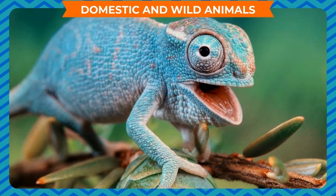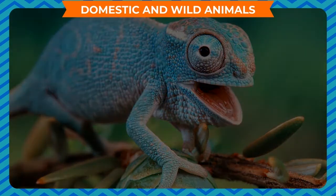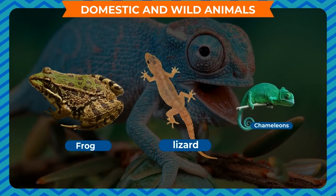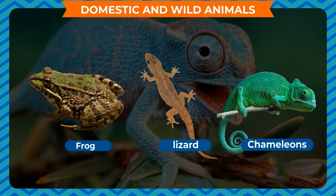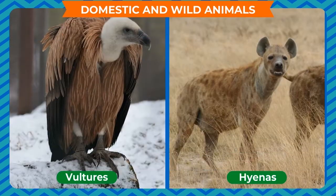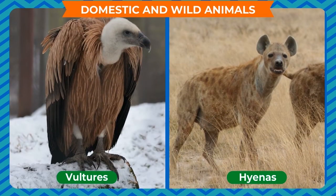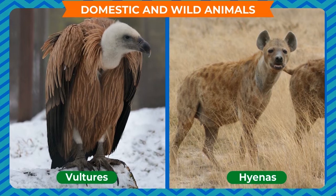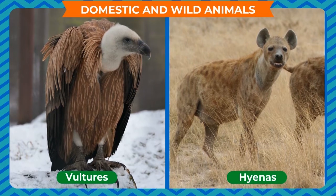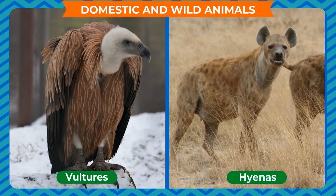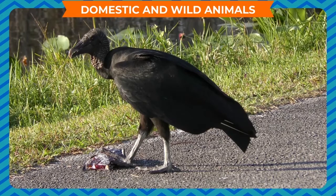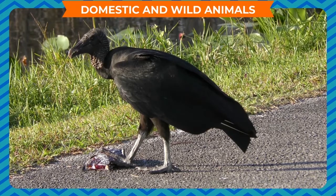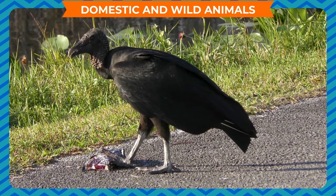Animals such as lizards, frogs, chameleons, etc. eat insects. Some animals such as vultures and hyenas eat the flesh of dead animals. These are called scavengers.